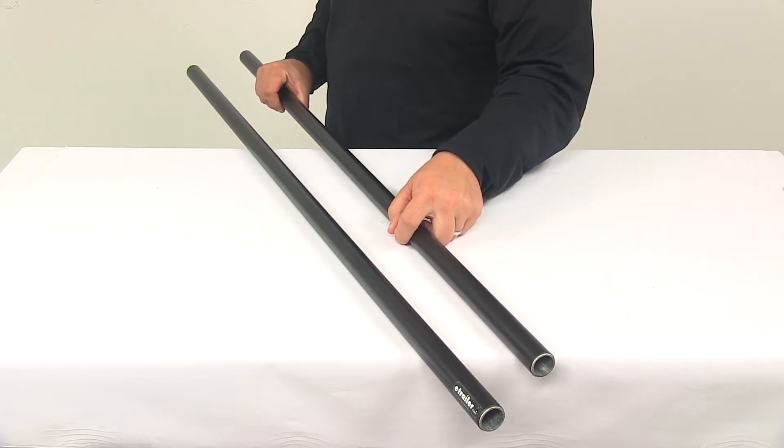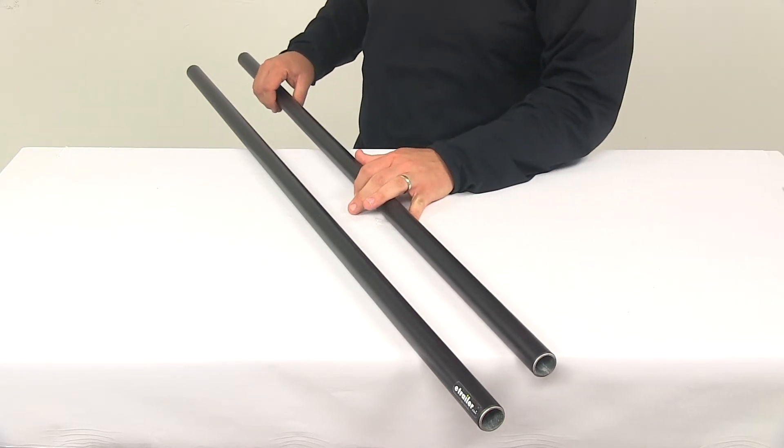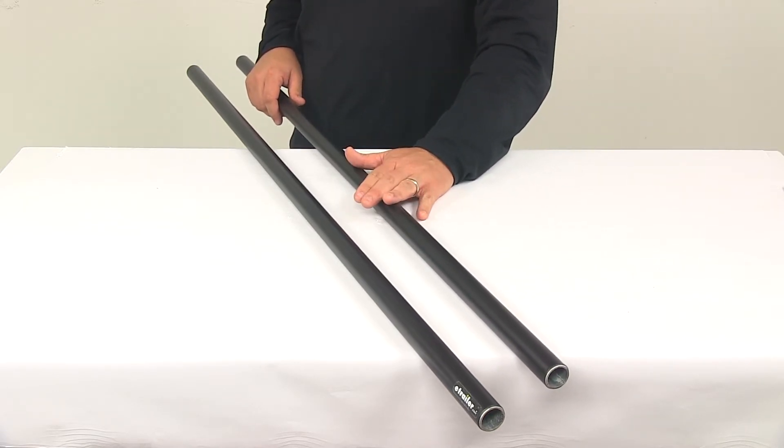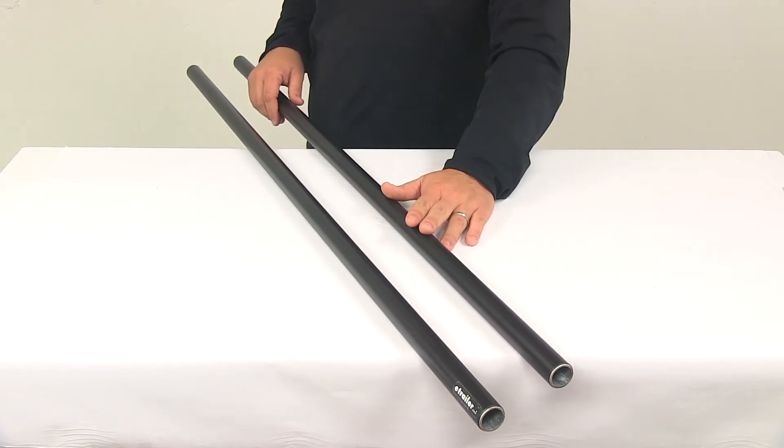At eTrailer.com we offer these bars in a variety of lengths to best fit your particular application. They are available in 48 inch, 58 inch, 66 inch, 78 inch and 86 inch lengths.